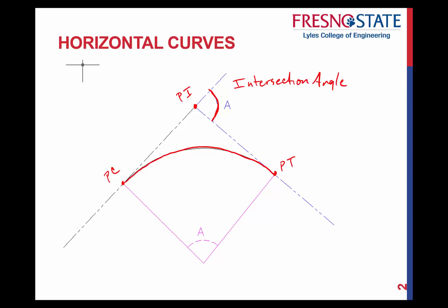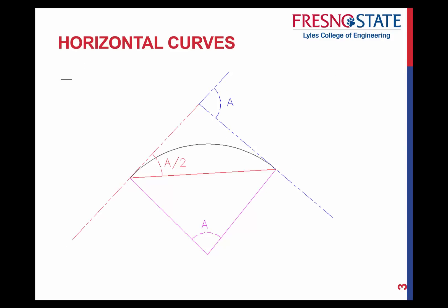The relationship that you have here is that if you're looking at it from the PC to the PT, this angle that's subtended right here is also equal to your intersection angle. So that's what we're looking at here. So that's your first one you want to be able to make sure you understand.